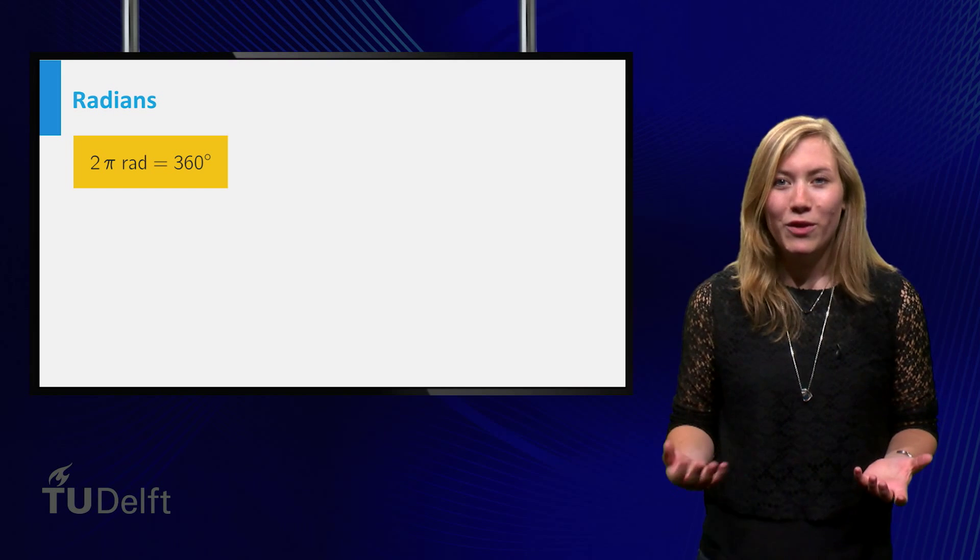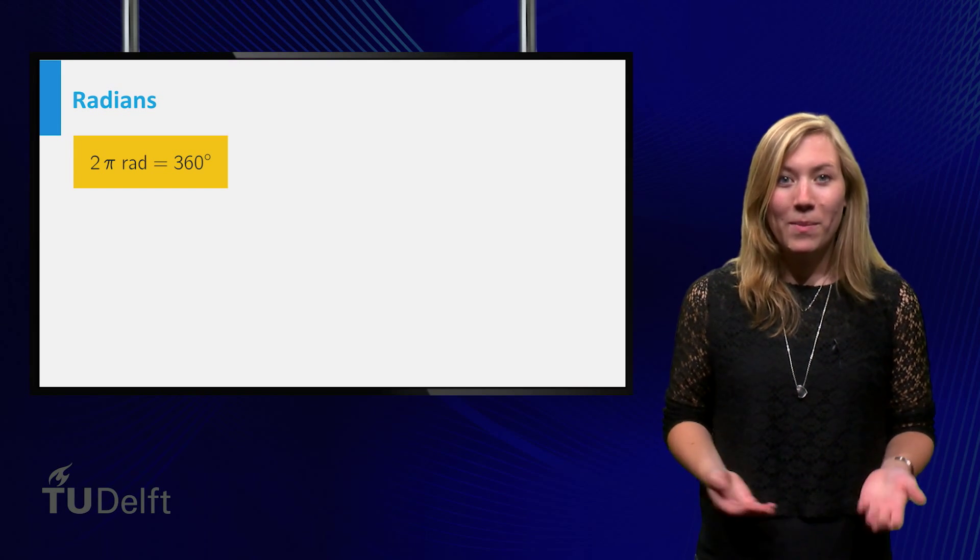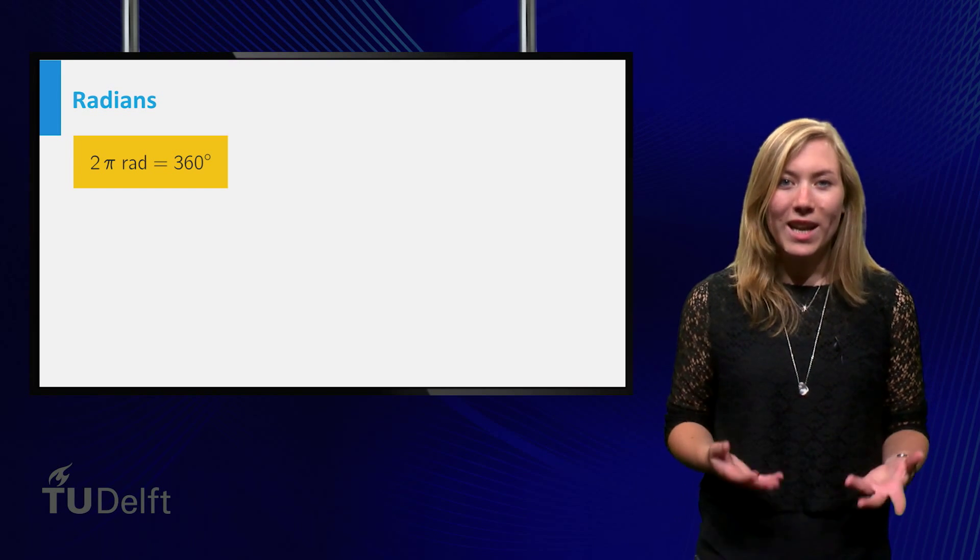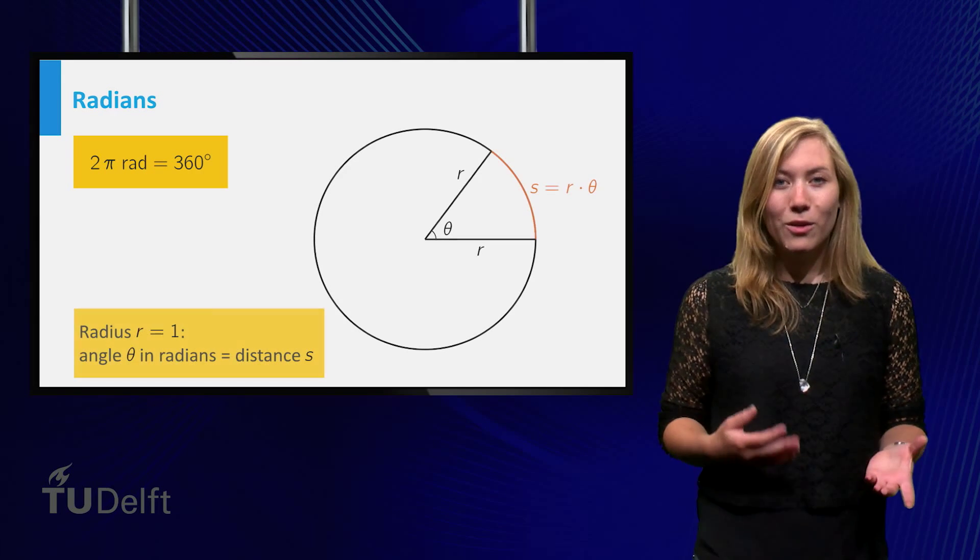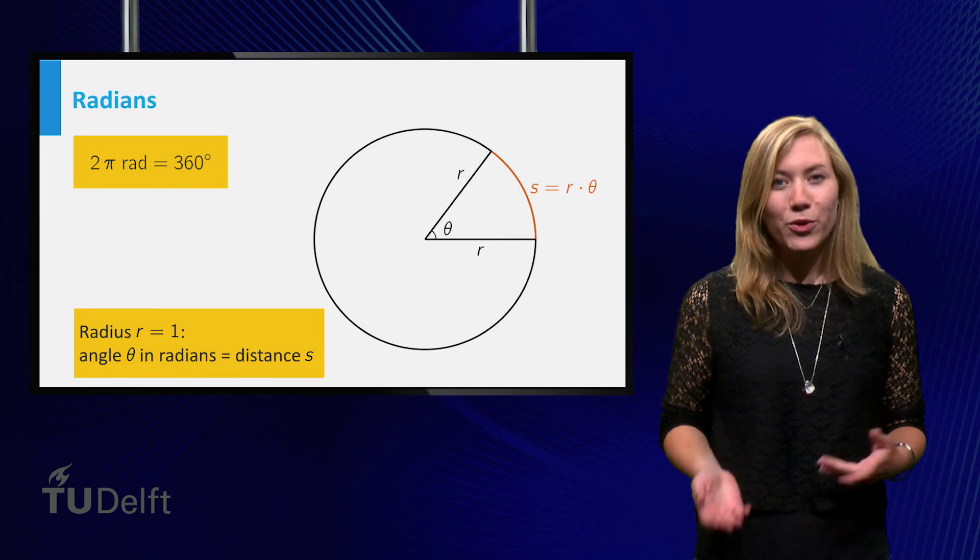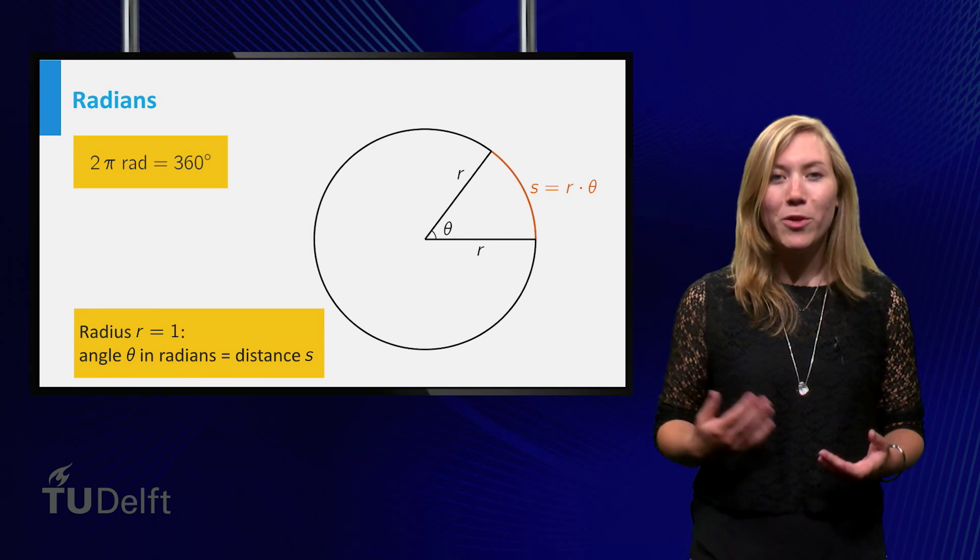Remember that the inputs of these functions are typically angles, and that in calculus we measure angles in radians. The length s of an arc of angle theta equals the radius of a circle times theta.